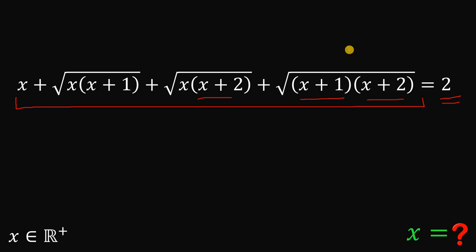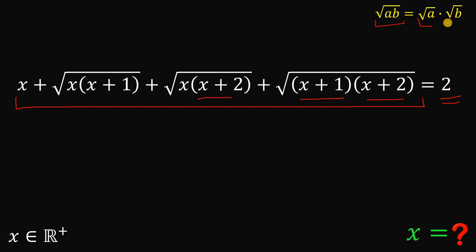To solve this, what we're going to do is to use some identities. Take note: when we have square root of a times b, this can be written as square root of a multiplied by the square root of b. So let's apply this.